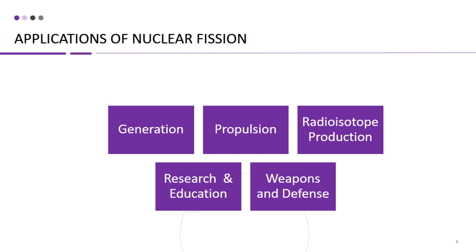Nuclear fission has been used in the field of propulsion, particularly in naval applications. Nuclear-powered submarines and aircraft carriers utilize nuclear fission reactions to produce steam, which powers turbines for propulsion, allowing for extended underwater operations and greater mobility. Nuclear propulsion offers advantages such as long endurance, high speed, and reduced reliance on external fuel supplies.